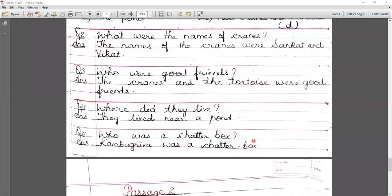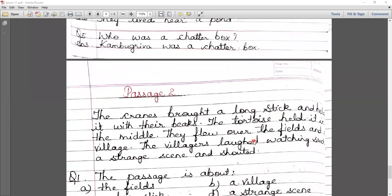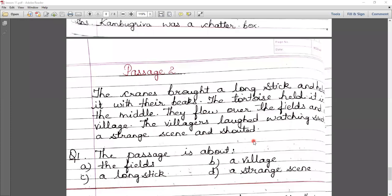I hope you have understood this passage. Now let's start passage number second. The cranes brought a long stick and held it with their beaks. They flew over the fields and village. The villagers laughed watching such a strange scene and shouted. So villagers saw this scene when the cranes held the stick with both beaks and the tortoise held from the middle.